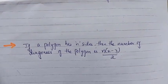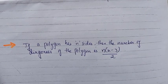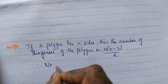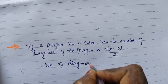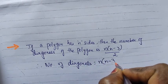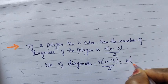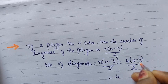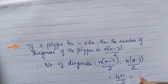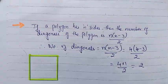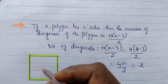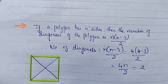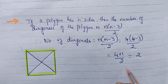Third one: if a polygon has n sides, then the number of diagonals of the polygon is n into (n minus 3) by 2. Therefore, number of diagonals equals n into (n minus 3) by 2, equal to 4 into (4 minus 3) by 2, equal to 4 into 1 by 2, equal to 2. So the number of diagonals equals 2, which is true.